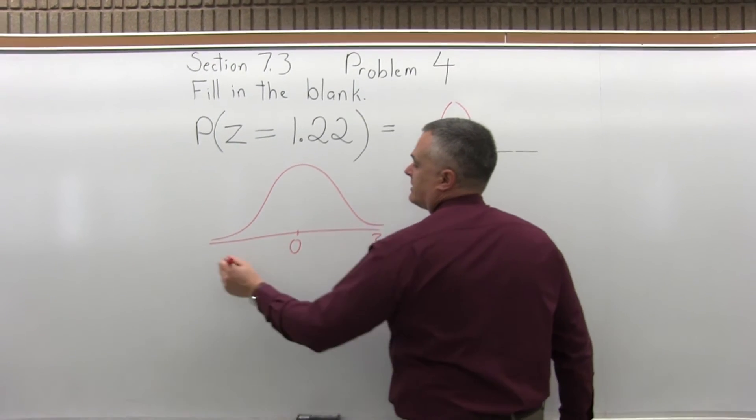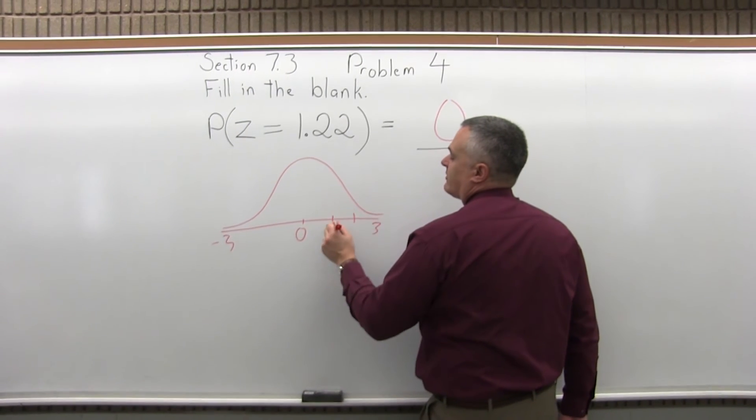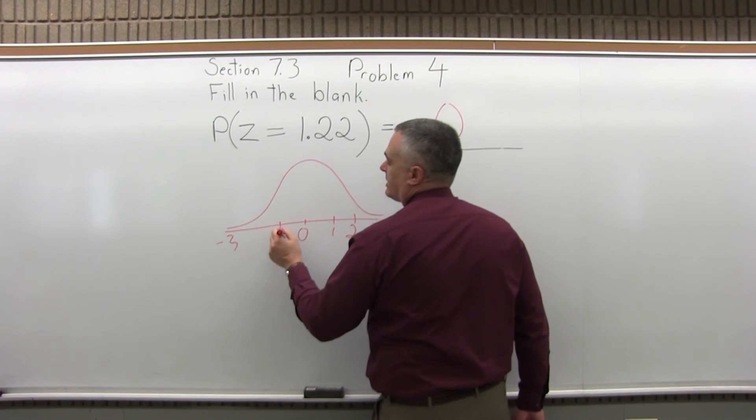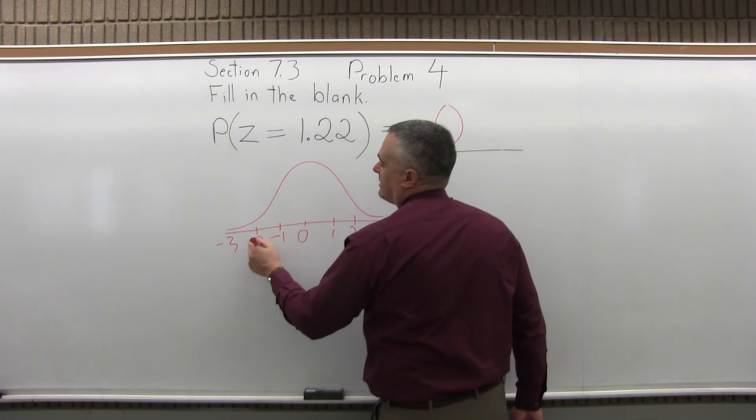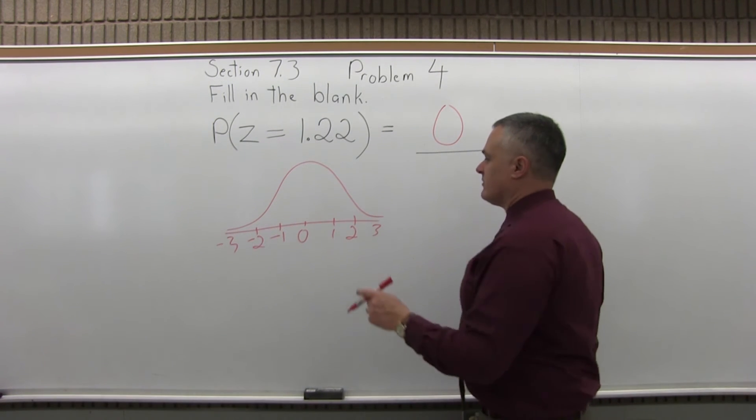If you look at the graph, typically what we find is the area on the graph is the probability. So if you have an area of, say, 0.74, that means you have a probability of 0.74.